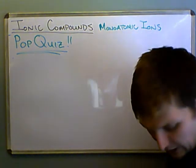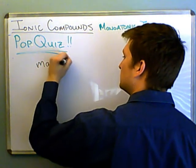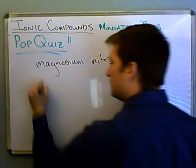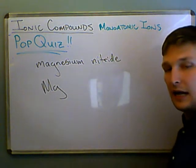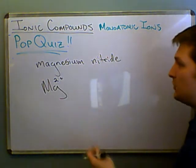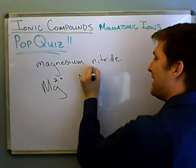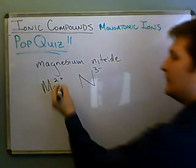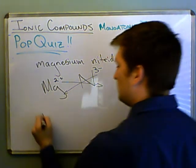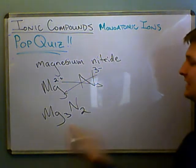Number five was magnesium nitride. Magnesium, Mg, is in group 2A, so it's almost always going to have a two plus charge. Nitride came from nitrogen — it's another predictable one, so it must be N³⁻ because nitrogen is in group 5A. Since these charges are not the same, we do the cross thing and get Mg₃N₂. That's magnesium nitride.